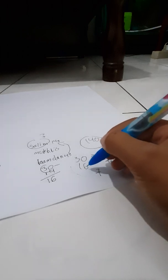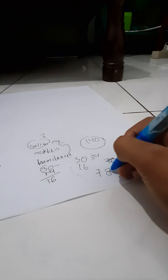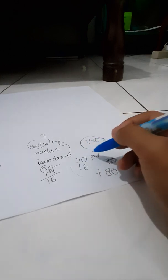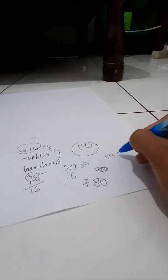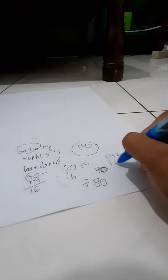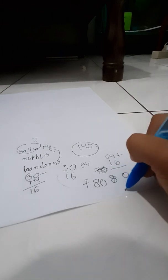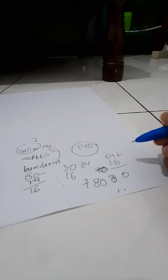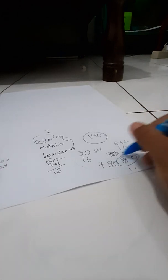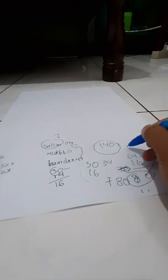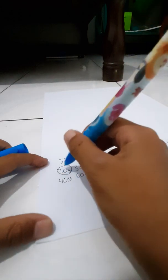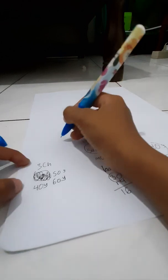So 30 plus 16 plus 34 would be 80. But that's not as much as we want, which is 140. So let's scribble out 30.